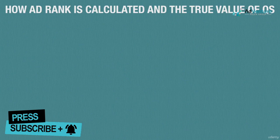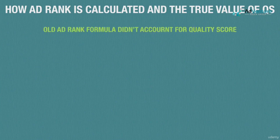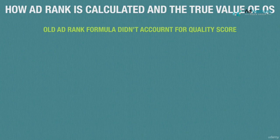We now know the history of quality score, why it was implemented, and all the factors that make up quality score. But the question still remains: who cares how good or bad your quality scores are? In the previous slide, we spoke about inflated costs with low quality scores, and now we're going to really dive into what exactly that means and how it works. It all begins with an understanding of how ad rank is calculated in the post quality score era.